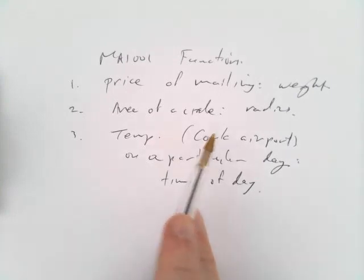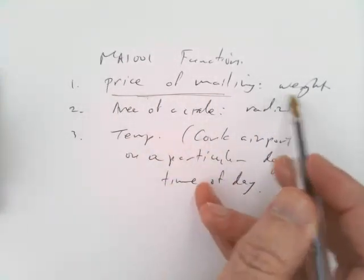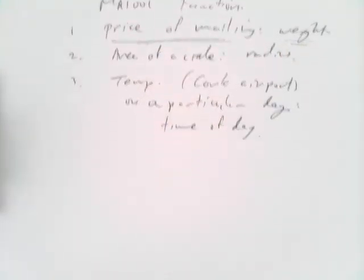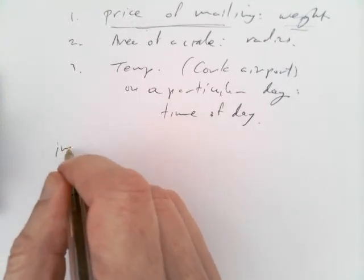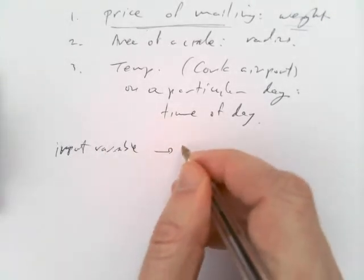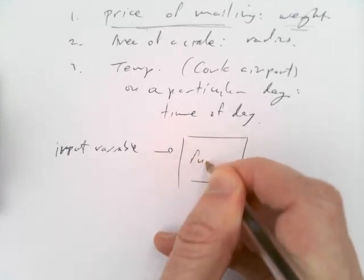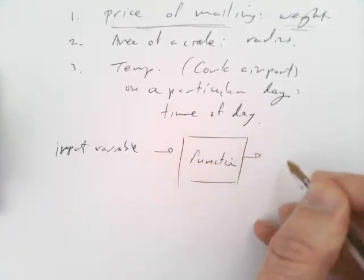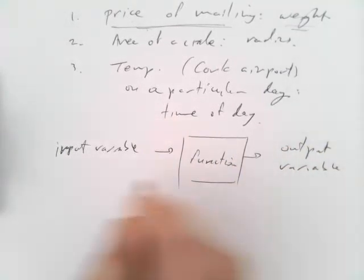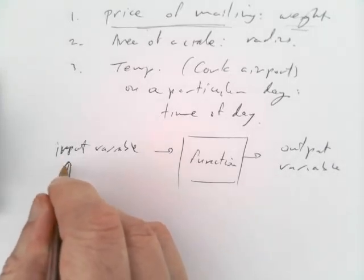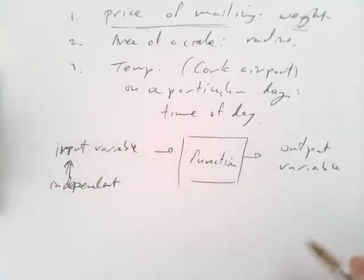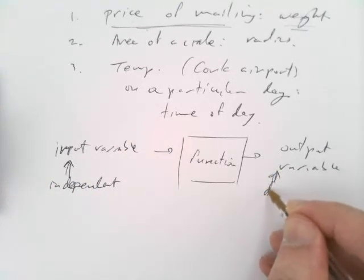Each of these is an example of a function, where this is a function of this input variable. The output is depending on the input. So we can make a rough picture of this. We have some sort of input variable, and we feed it into the function, and out comes an output variable. The input variable is also often called the independent variable.